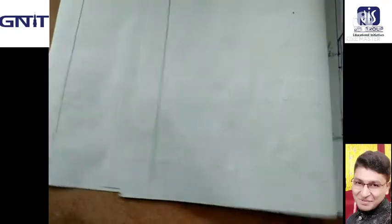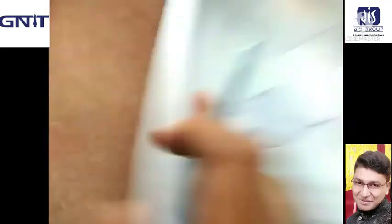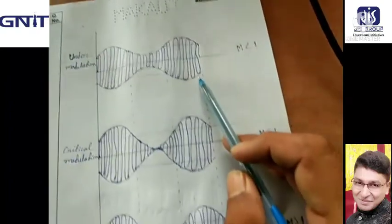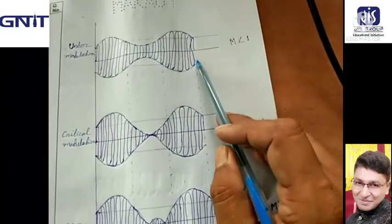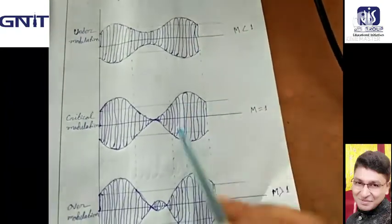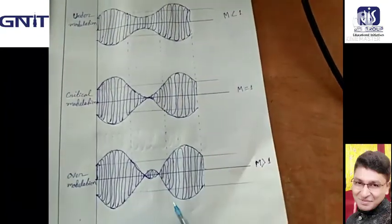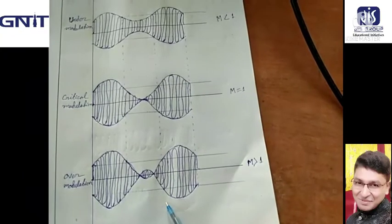This is our under-modulation waveform. This is our critical modulation waveform. This concludes our amplitude modulation experiment.